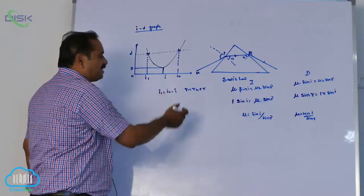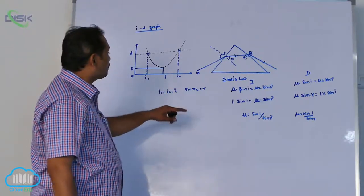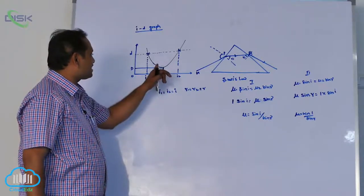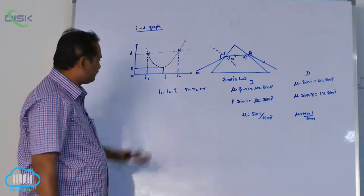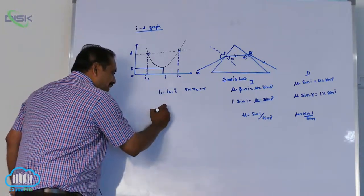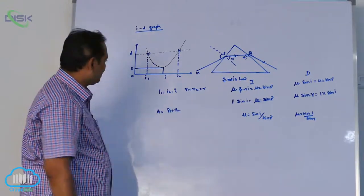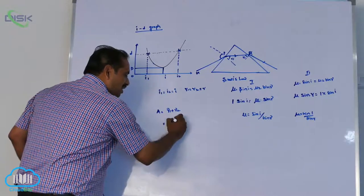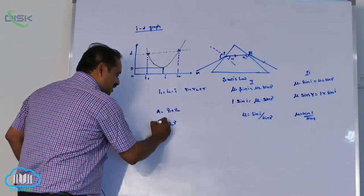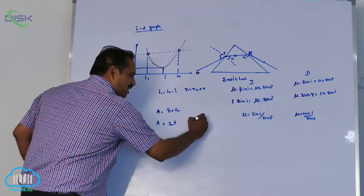Okay, i1 equal to i2 equal to i, r1 equal to r2 equal to r, all the places, only at minimum deviation. We know very well a equal to r1 plus r2. From this, what I can write? a equal to 2r, r equal to a by 2.